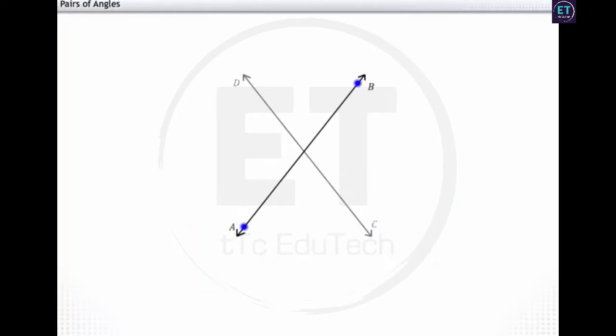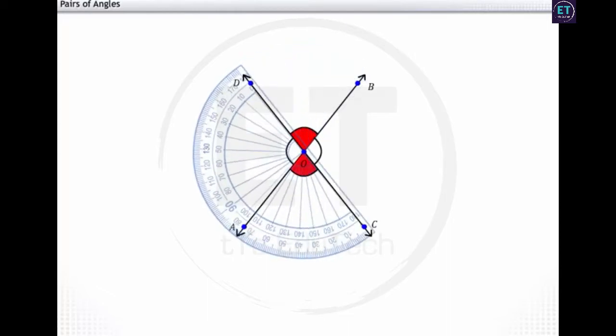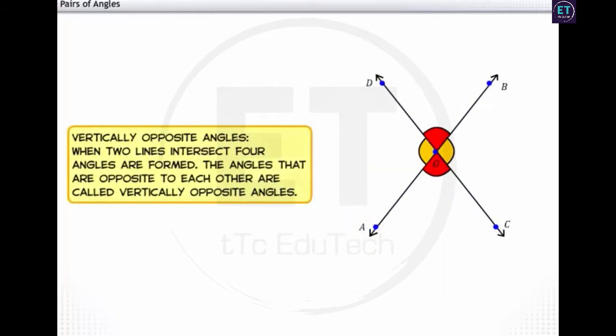Let lines AB and CD intersect at a point O. At the point of intersection, four angles are formed. On measuring the opposite angles, you will find that they are equal. Such angles are known as vertically opposite angles.